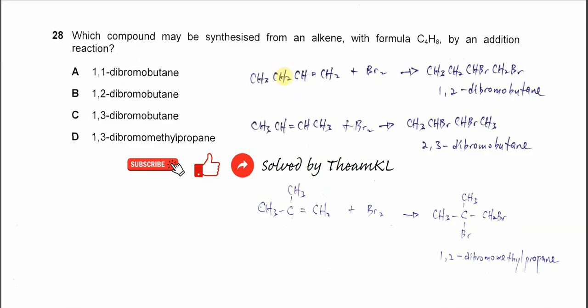So there are three possible alkenes: but-1-ene, but-2-ene, and methylpropene.